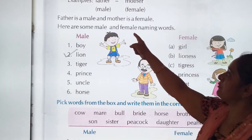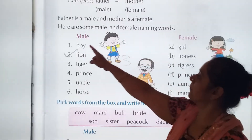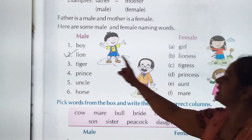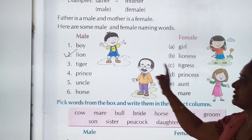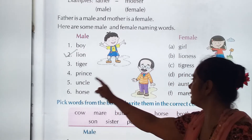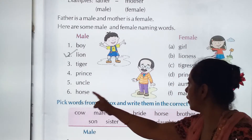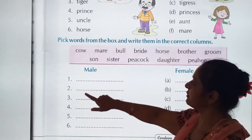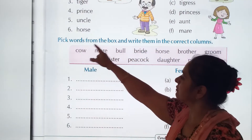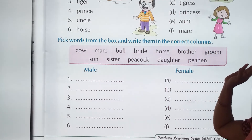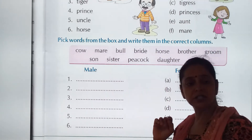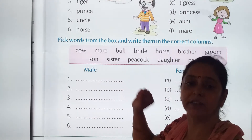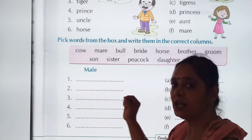Here are some male and female naming words: boy, girl, lion, lioness, tiger, tigress, prince, princess, uncle, aunt, horse, man. From this given box, pick words and write them in the correct column. You have to classify and write down in the correct column.